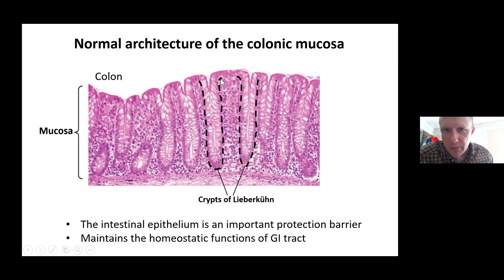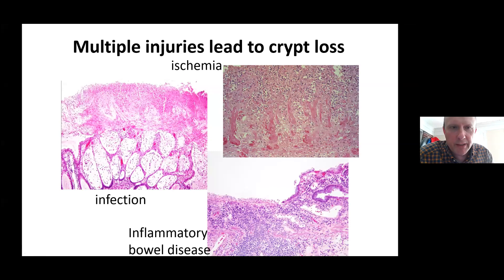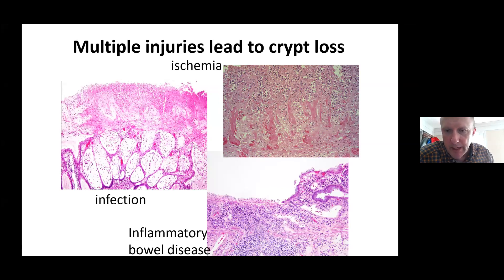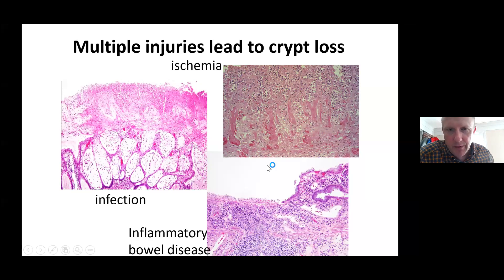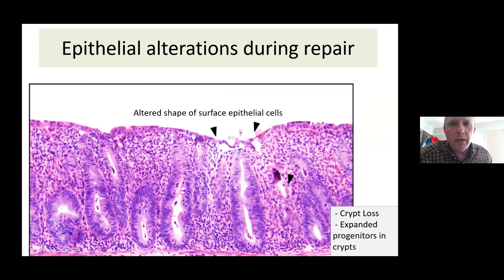Cut sections through the normal colon show it is punctuated by crypts of Lieberkühn that house intestinal epithelial stem and progenitor cells — the engine of self-renewal that keeps the gut lining perpetually renewing. In mice this renews about once a week in the colon; in humans it's a bit longer but still pretty quick. Cells are born here and basically die out next to the lumen. The key is to maintain a large number of these crypts, which is critical for maintaining the barrier and a healthy gut.